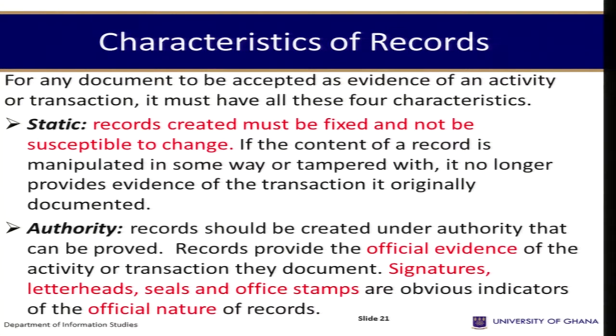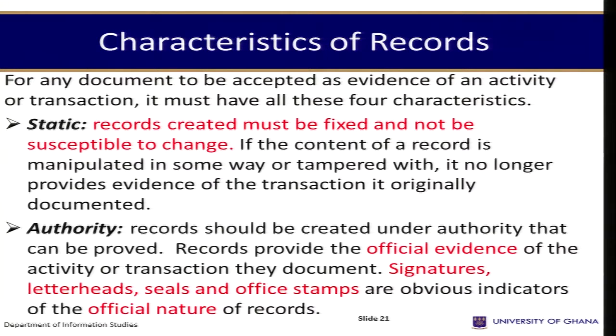The second characteristic is authority: records should be created under authority that can be proved. If you work for the University of Ghana, you must be authorized to create a record by virtue of the schedule you are placed on. Records provide the official evidence of the activity or transaction they document. Signatures, letterheads, seals, and office stamps are obvious indicators of the official nature of records — whenever you receive a letter, you want to see that it is on a letterhead, signed, dated, and stamped.